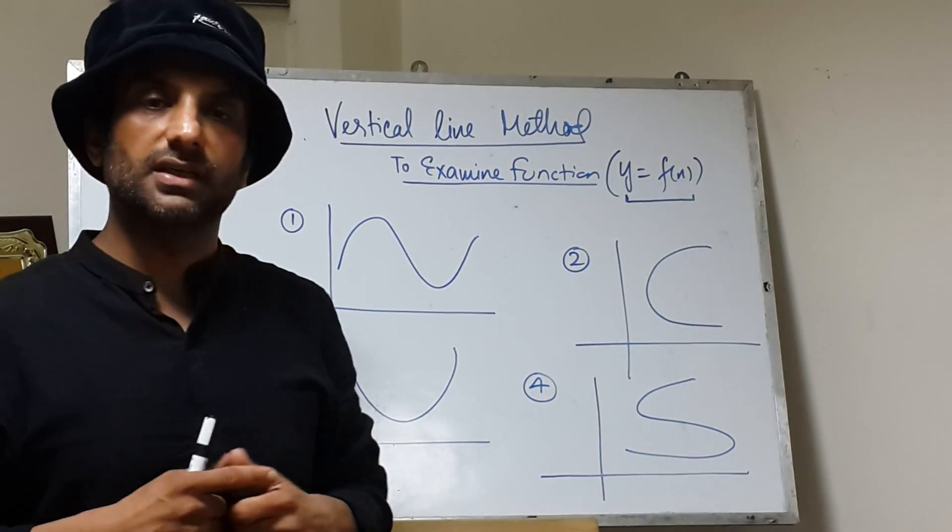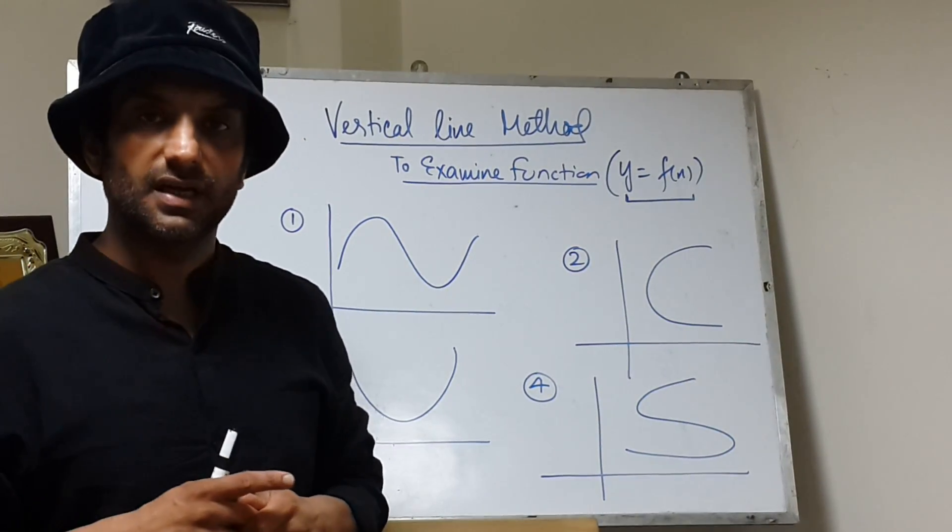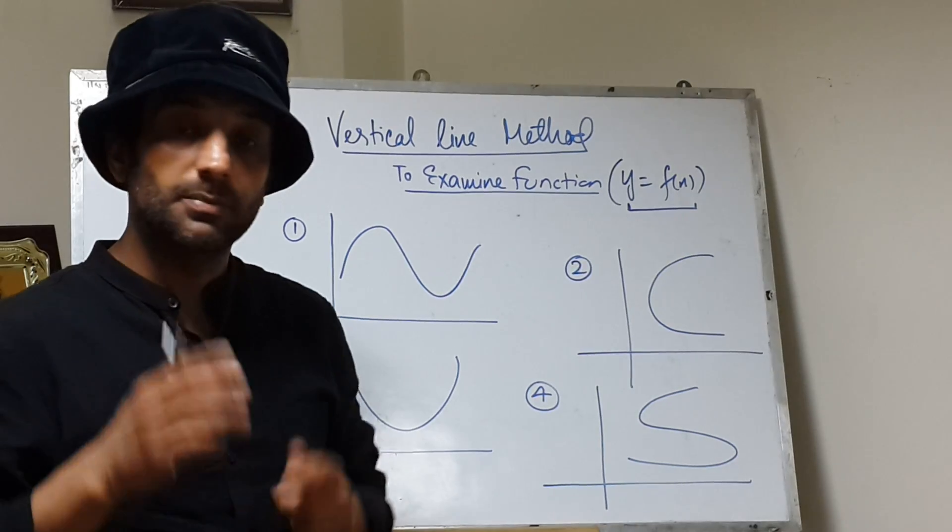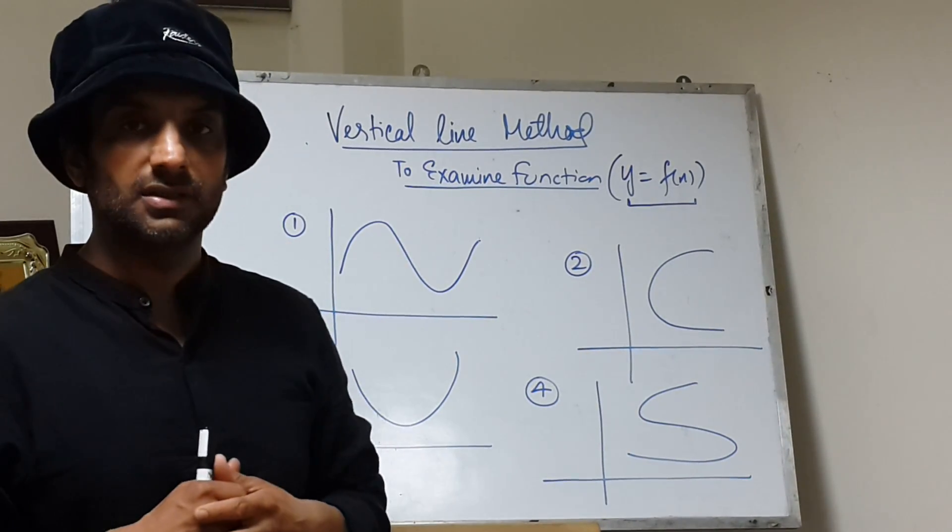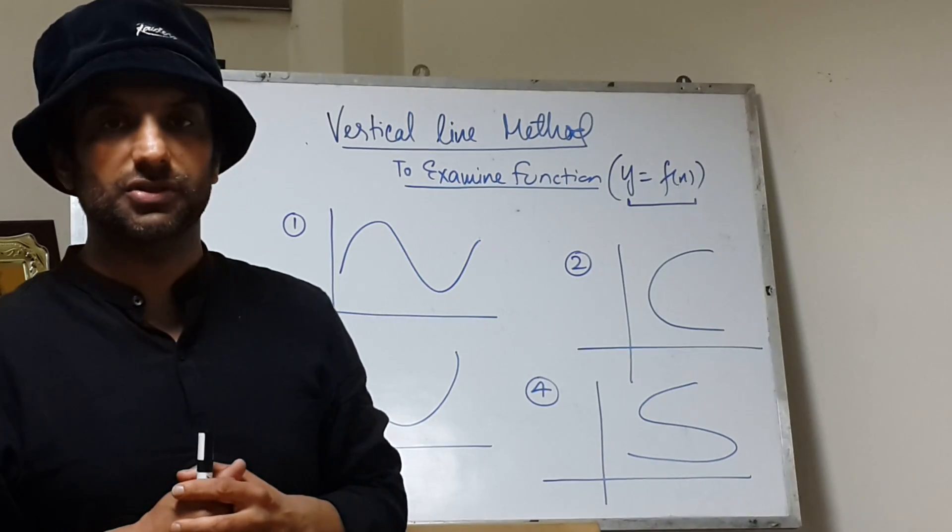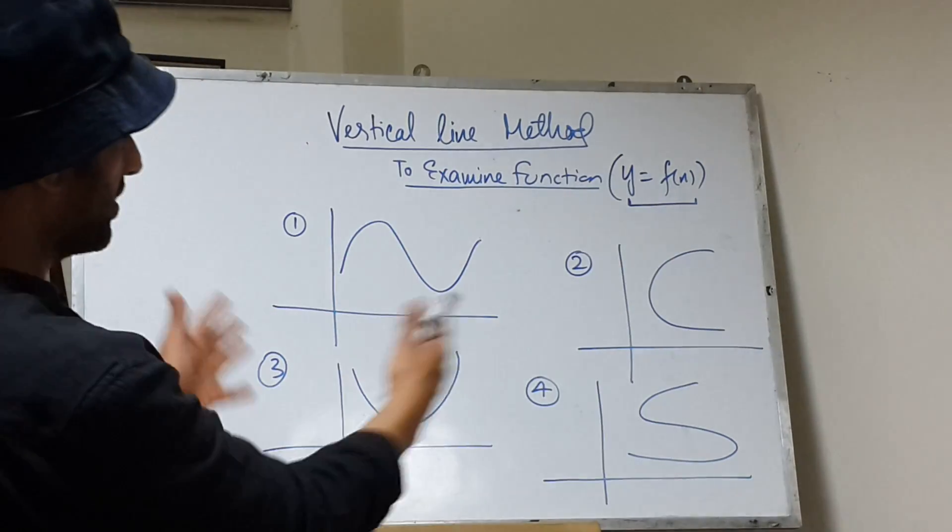If one vertical line cuts the curve at two points, it means one x component is giving rise to two y components. So that curve will not be a function. We have different curves here.